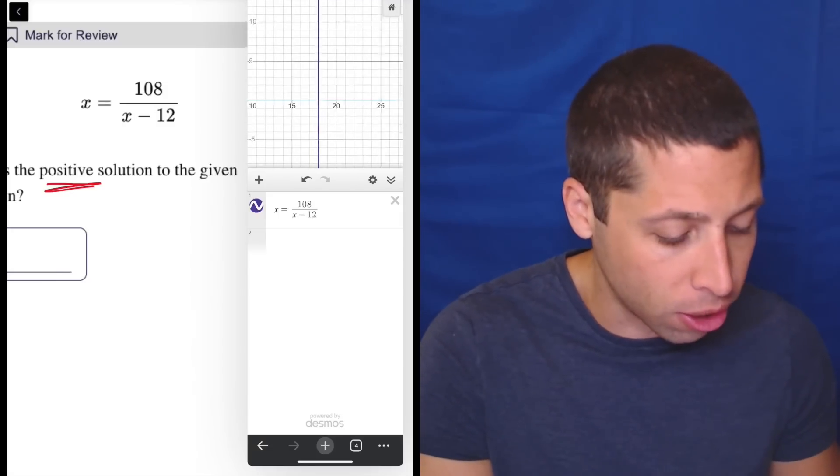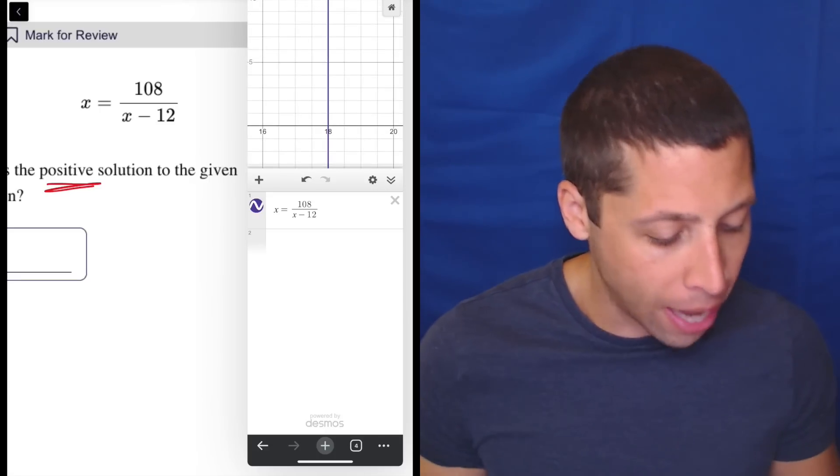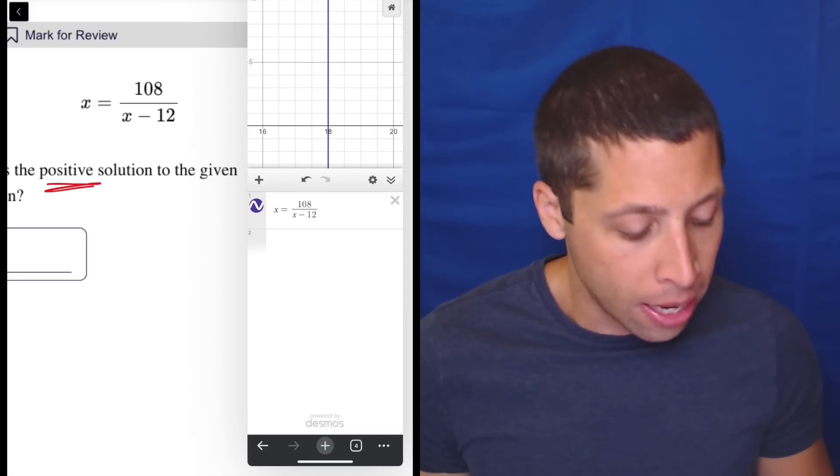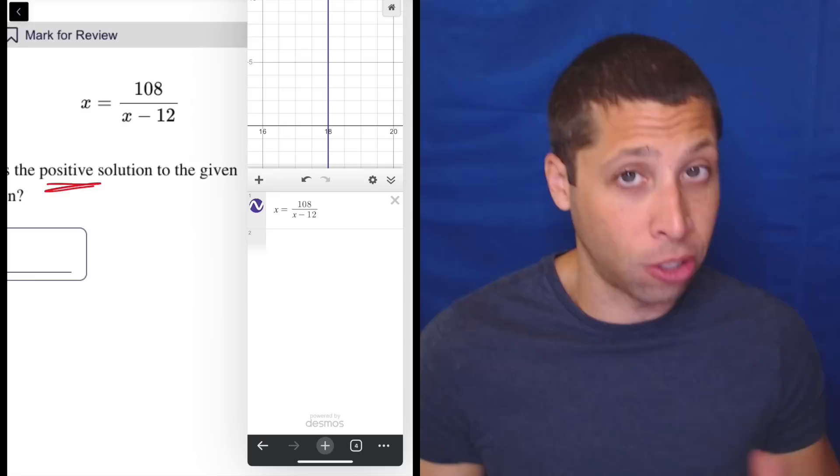And if I was unsure, I could just scroll and zoom and see that. Yeah, it's definitely at 18. Now, sometimes you can tap that point and it'll just tell you.